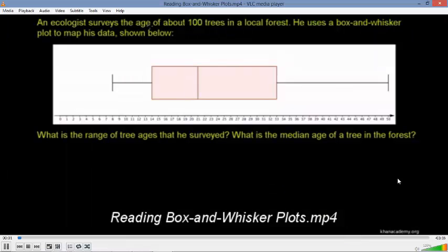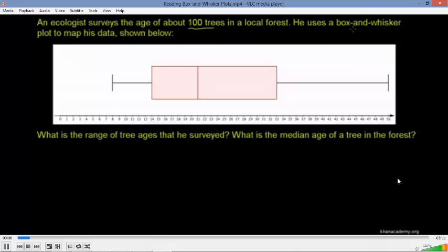An ecologist surveys the age of about 100 trees in a local forest. He uses a box and whisker plot to map his data shown below. What is the range of tree ages that he surveyed? What is the median age of a tree in the forest? So first of all, let's make sure we understand what this box and whisker plot is even about. This is really a way of seeing the spread of all of the different data points, which are the age of the trees, and to also give other information like what is the median and where do most of the ages of the tree sit.